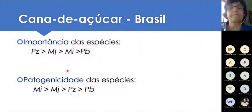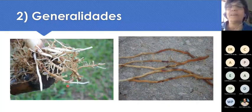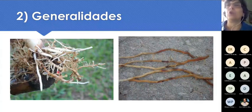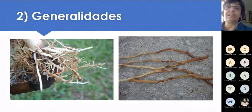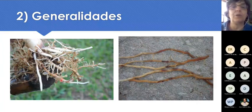Esses nematóides atacam o sistema radicular. Os do gênero Meloidogyne produzem galhas, que são deformações nas raízes, encontradas em todo tipo de raiz — tanto nas emitidas pelo tolete como nas emitidas pelo perfilho. Mas nem sempre a gente encontra sintomas tão nítidos. Aliás, é até raro encontrar raízes de cana com galhas tão visíveis. Muitas vezes as galhas estão dentro das raízes grossas da cana e passam despercebidas. Então, a gente pode ter problemas com Meloidogyne sem visualizar as galhas — isso é muito comum.